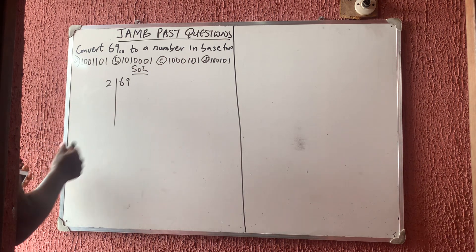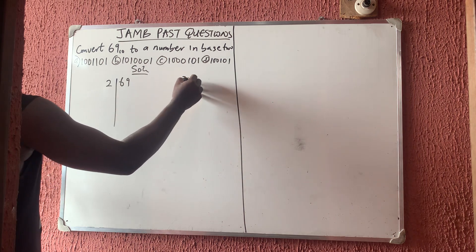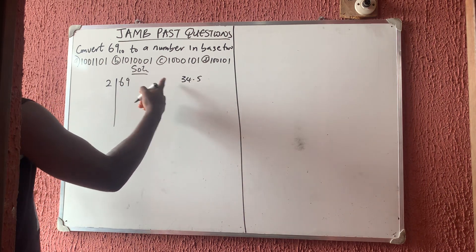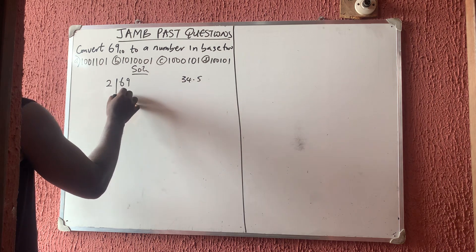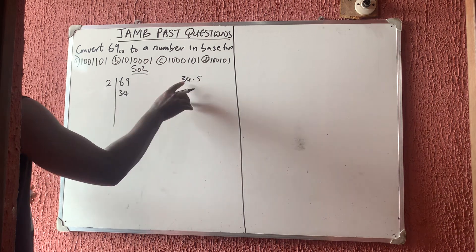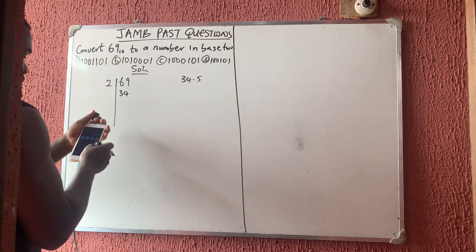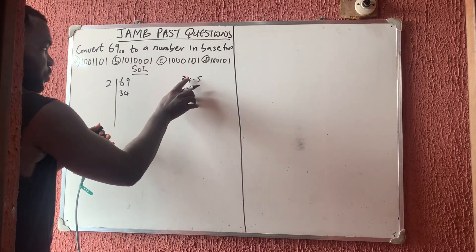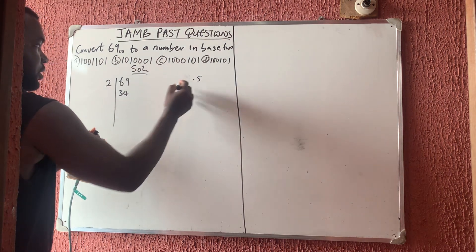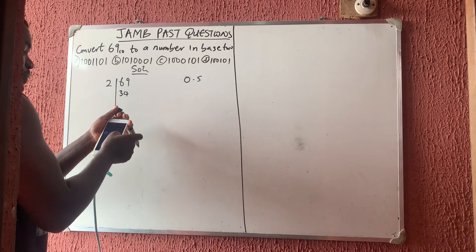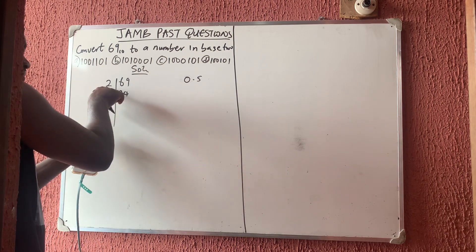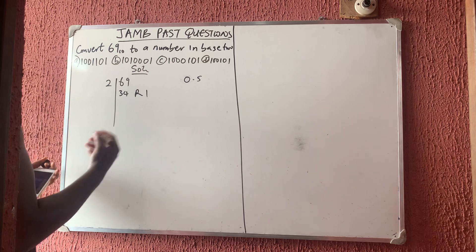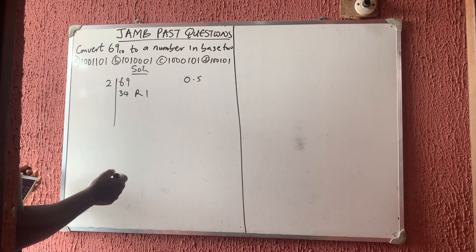69 divided by 2 gives 34.5. Write the whole number 34. Now subtract: 34.5 minus 34 gives 0.5. Multiply 0.5 by that same number you divided with — multiply by 2 — and you get remainder 1. That's how you get the remainder.